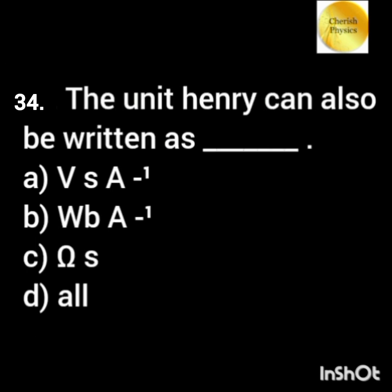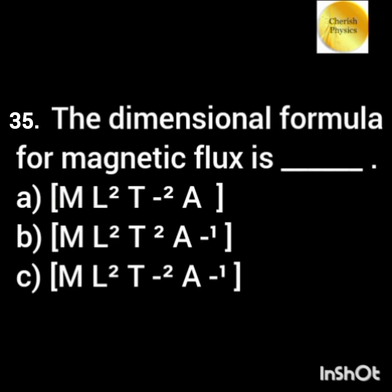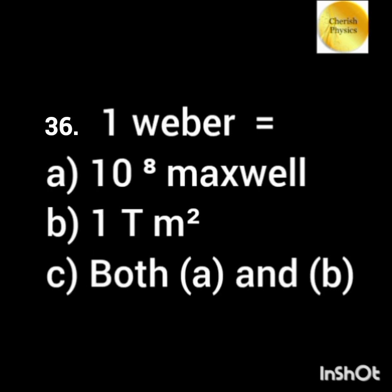The unit henry can also be written as dash. The dimensional formula of magnetic flux is dash. One Weber is equal to dash.